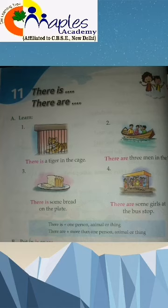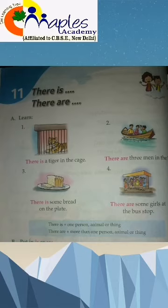Hello students, today we are going to read Chapter 11 in English grammar. The name of this chapter is 'There Is / There Are.' In this chapter, we will learn where we use 'there is' and where we use 'there are.'